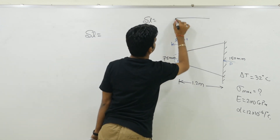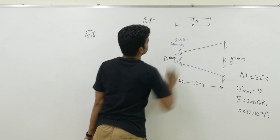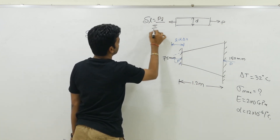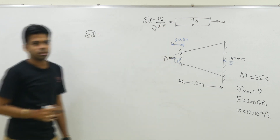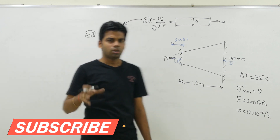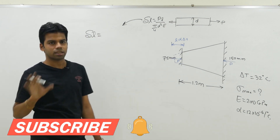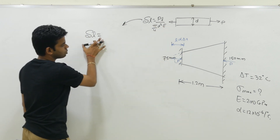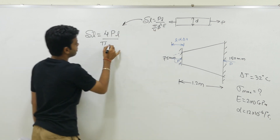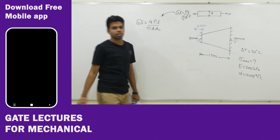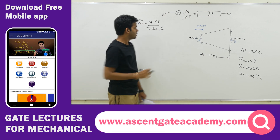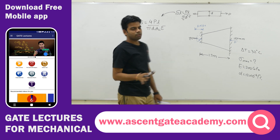For a uniform cross-section bar of diameter D with external force P applied, the deflection is PL/AE = PL/(π/4 · D² · E) = 4PL/(π·D²·E). Now since the diameter is changing in a tapered bar, replace D² with D1·D2. So the deflection formula for a tapered bar becomes 4PL/(π·D1·D2·E). If you derive it this way, you will never forget it. This is the deflection in the tapered bar due to the axial load.